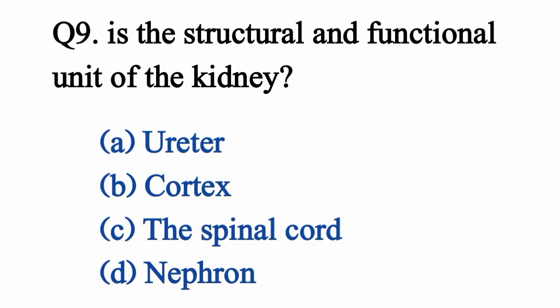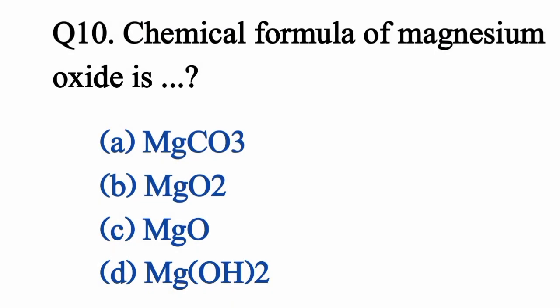Question 9: The structural and functional unit of the kidney is... Correct option D: Nephron. Question 10: Chemical formula of magnesium oxide is...? Correct option C: MgO.